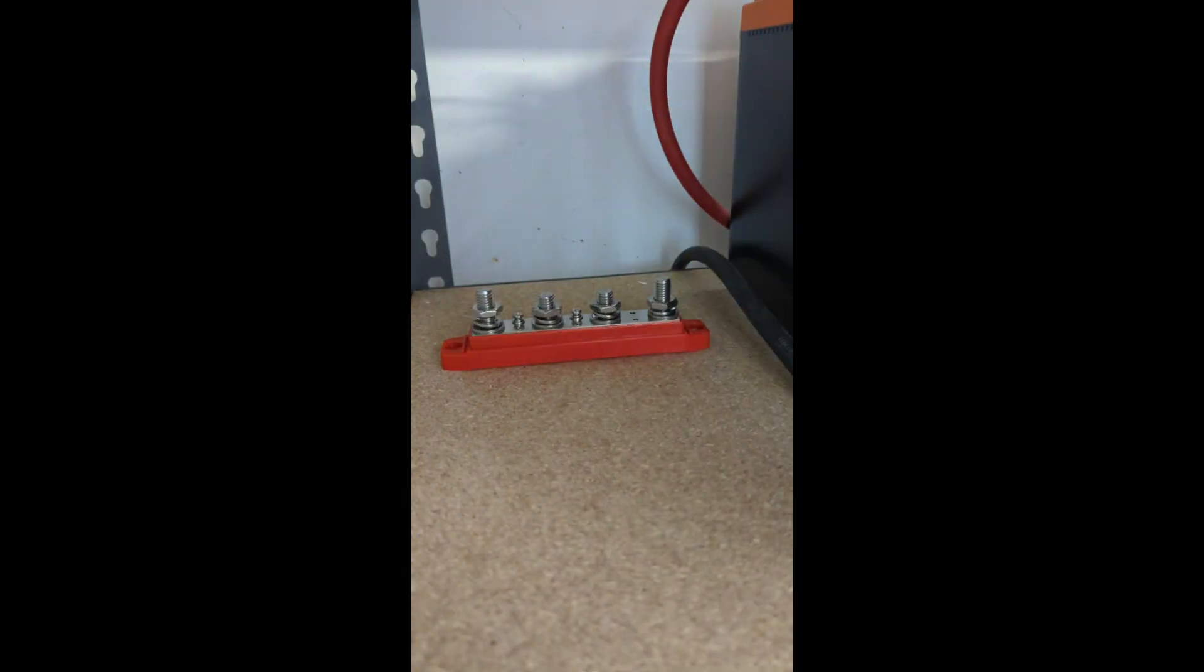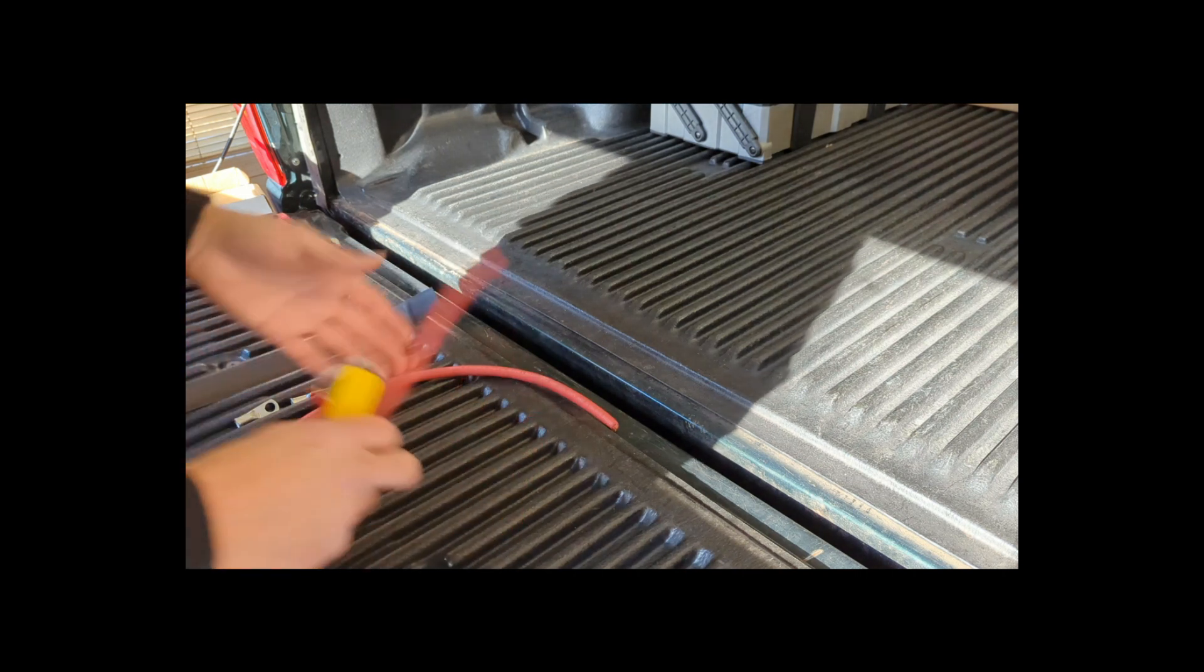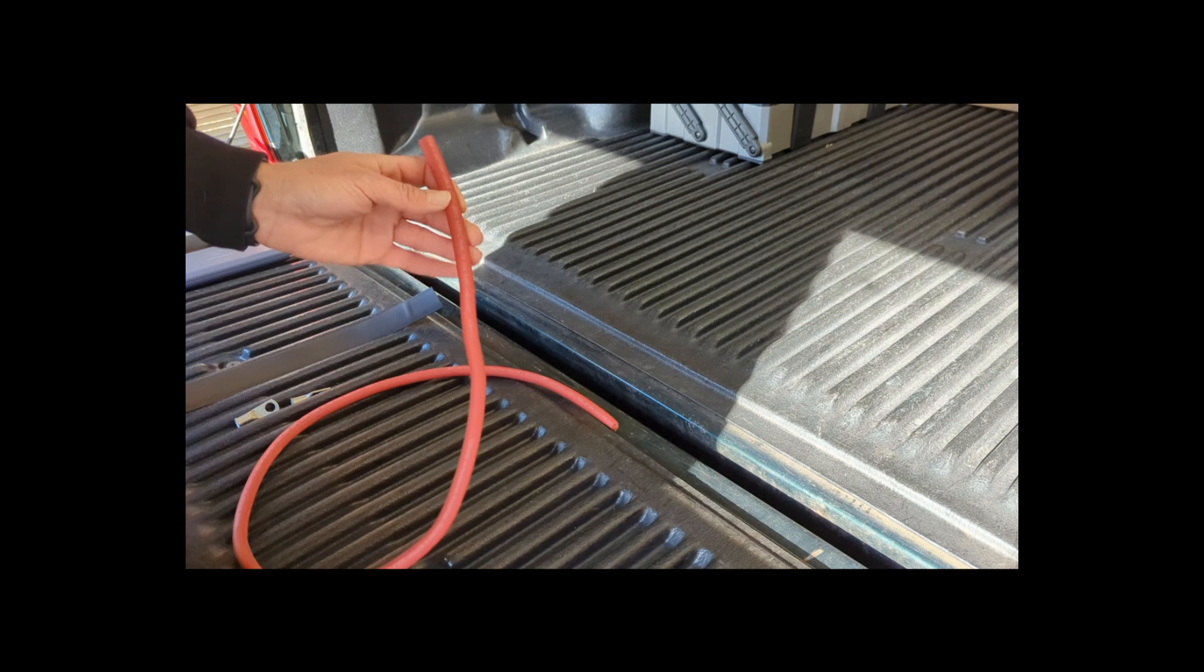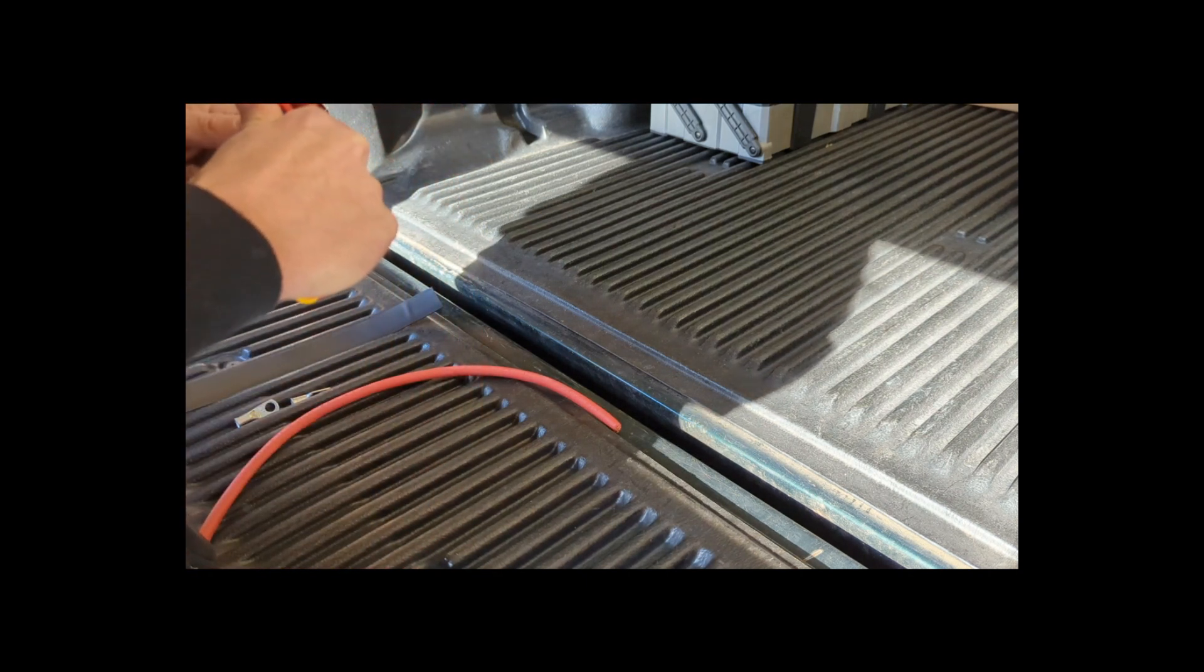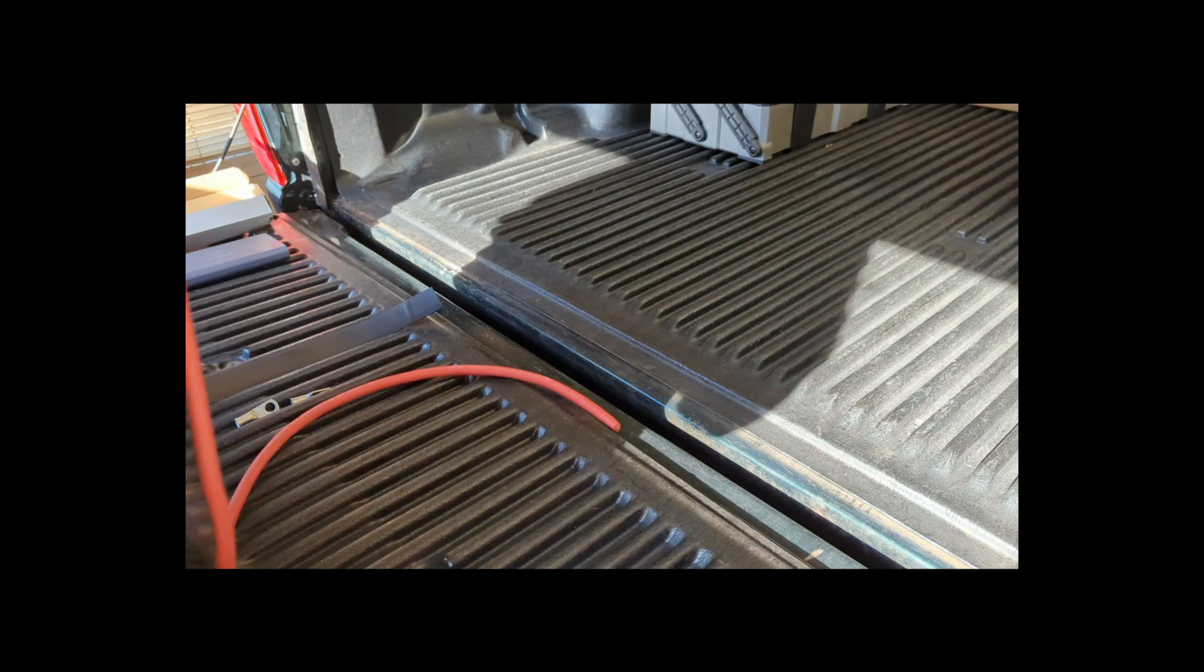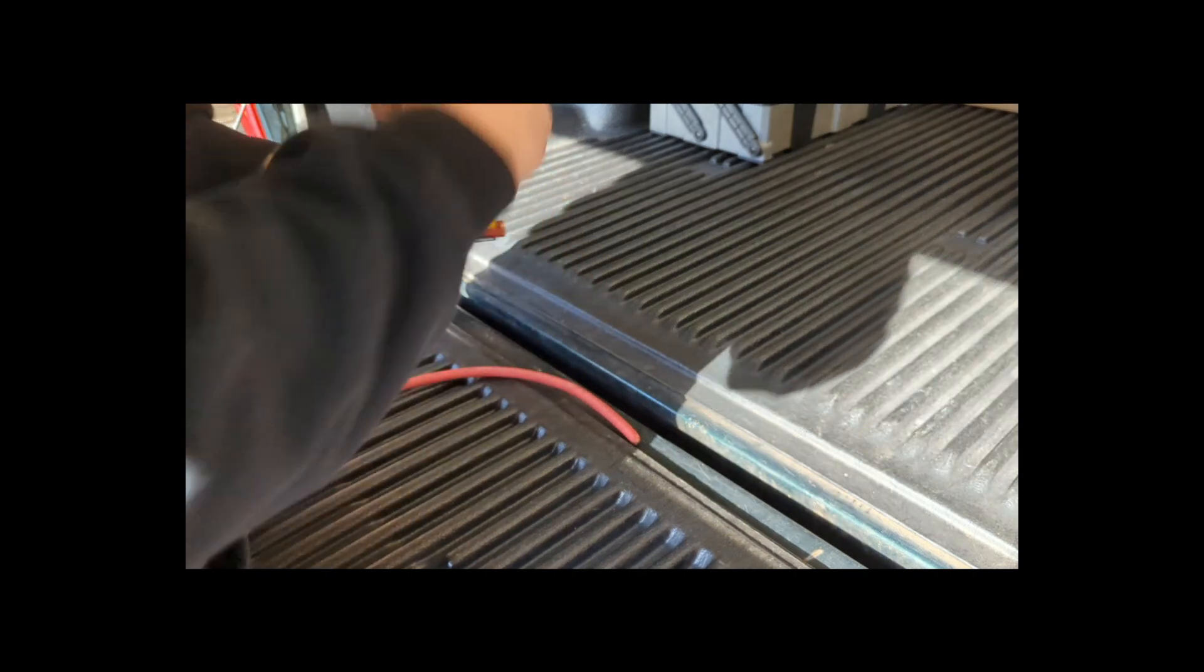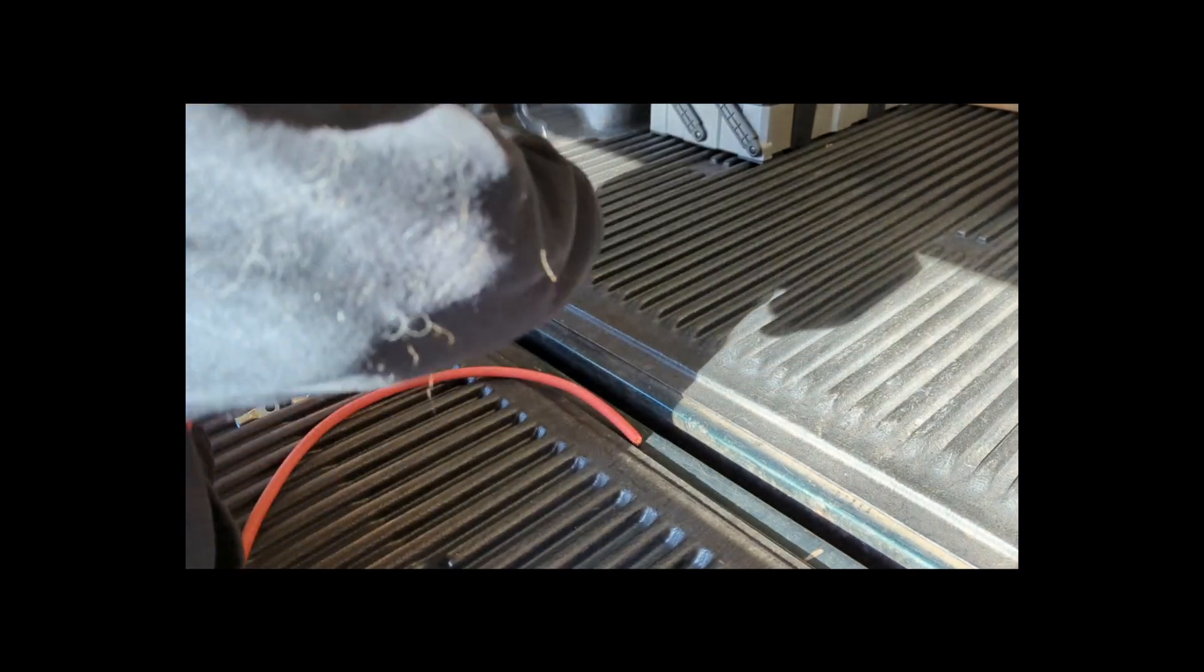With the positive bus bar mounted down, we can now run our positive connections coming from the charge controller and then going to the batteries. Before we can start attaching our wires to the positive bus bar, we need to make a new wire. This is a 2-gauge wire. It's going to be running from one of the batteries to the bus bar. We're going to strip it down and install lugs on it.